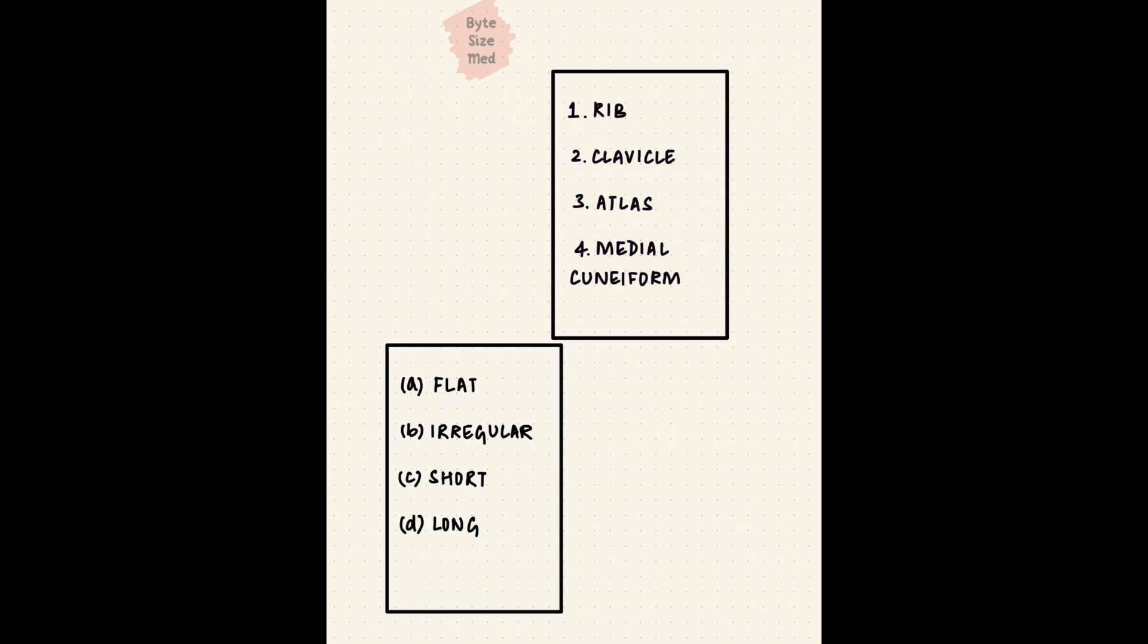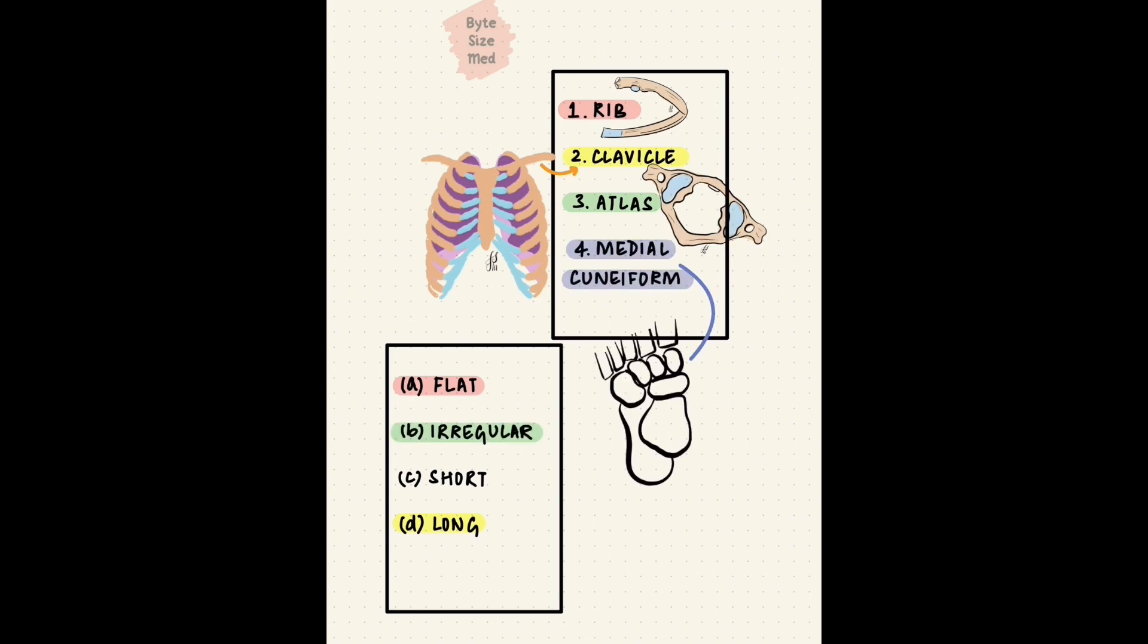Time's up. The ribs are flat bones - they protect organs in the thoracic cage. The clavicle is a long bone. Atlas, which is the first cervical vertebra, is an irregular bone. And the medial cuneiform, which is a small bone in the foot, along with the other tarsal bones, is a short bone.